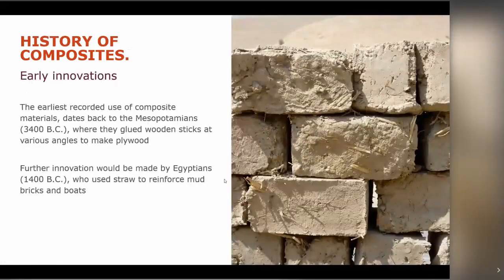We're going to start by reviewing the history of composites. In this slide, you can see that we're starting very early. Human thought has used materials such as wooden sticks and mud to create bricks. The key thing is humans tried to reinforce basic mud material with straws, which is effectively what composites do. The fibre in modern composite materials does exactly the same function as the straw sticks in mud bricks — reinforcing the material in a particular direction, giving it strength and stiffness.